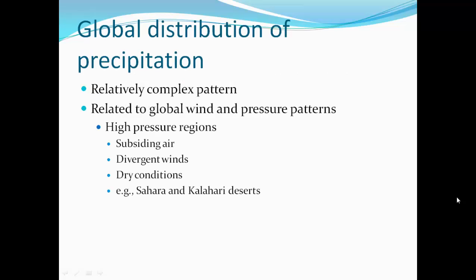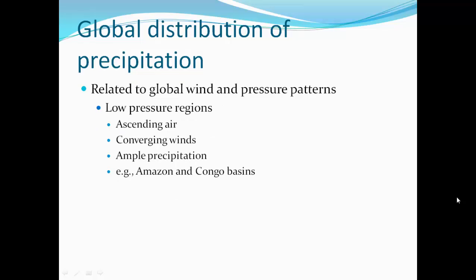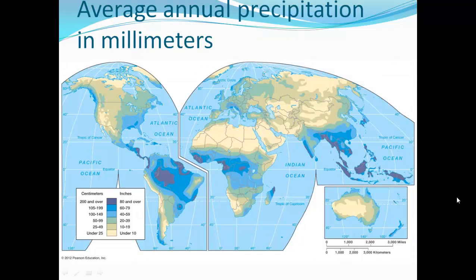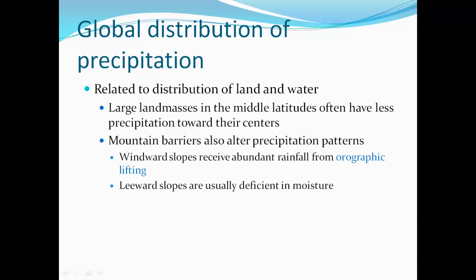Global distribution of precipitation is a relatively complex pattern related to global wind and pressure patterns. High-pressure regions have subsiding air, divergent winds, and dry conditions — like the Sahara and Kalahari deserts along 30 degrees latitude. Low-pressure regions have ascending air, converging winds, and lots of precipitation — over the Amazon and Congo at equatorial areas. There's more rainfall in the southeastern United States than in the Midwest. Large land masses in the middle latitudes often have less precipitation towards their centers. Mountain barriers also alter precipitation patterns — windward slopes receive abundant rainfall from orographic lifting, while leeward slopes are deficient in moisture, creating a rain shadow.